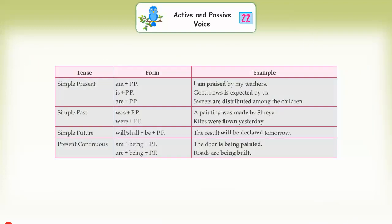Simple present passive: am/is/are + PP. Examples: 'I am praised by my teachers,' 'Good news is expected by us,' 'Sweets are distributed among the children.' Simple past passive: was/were + PP. Examples: 'A painting was made by Shreya,' 'Kites were flown yesterday.'